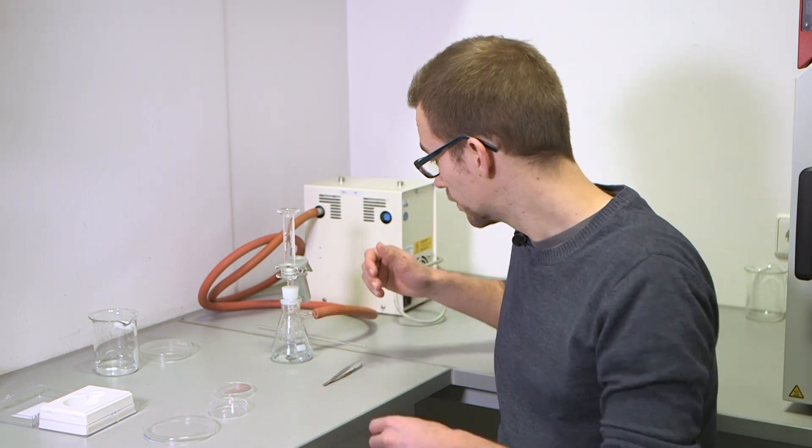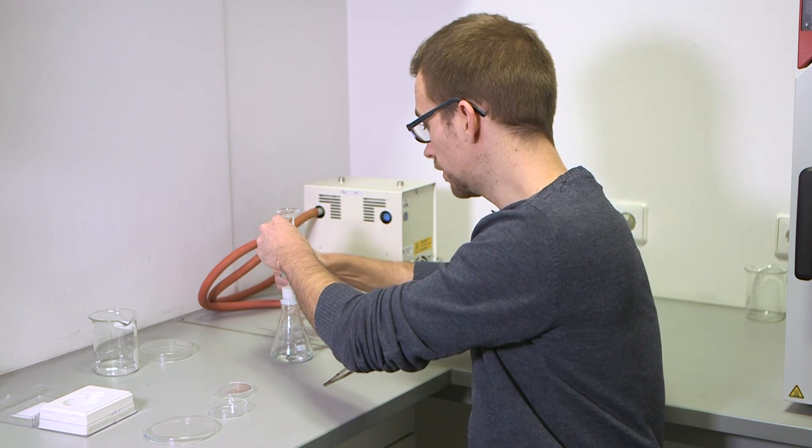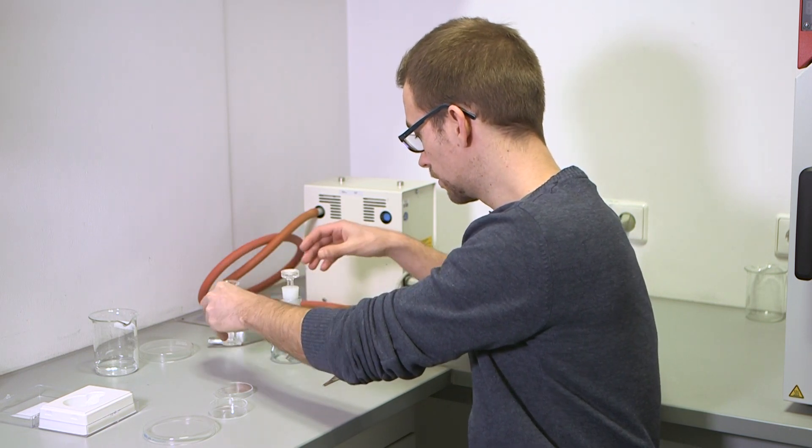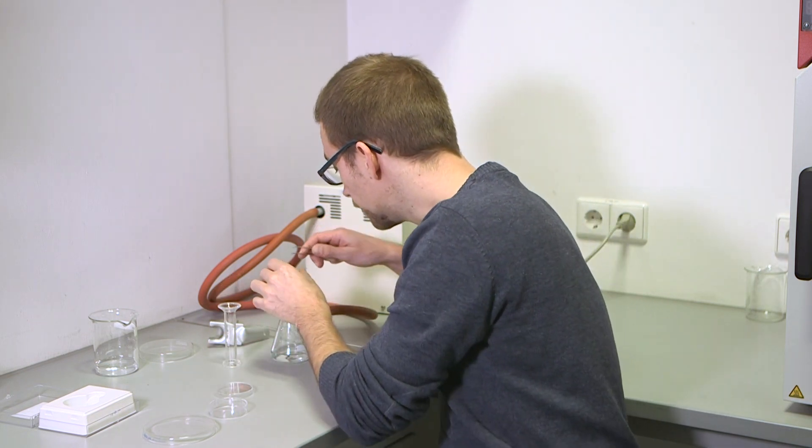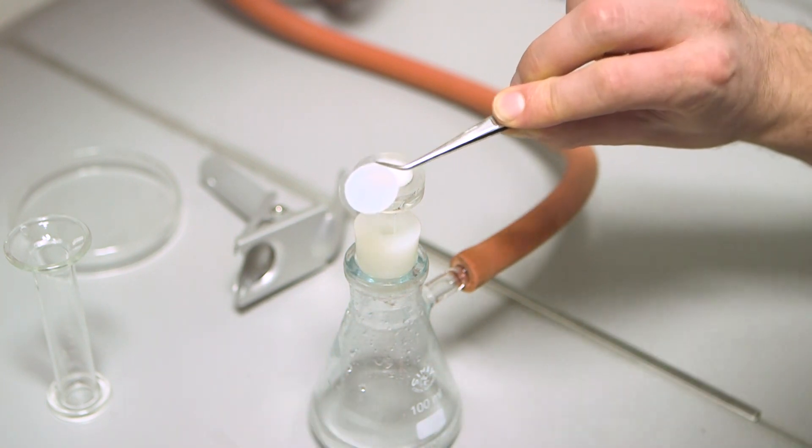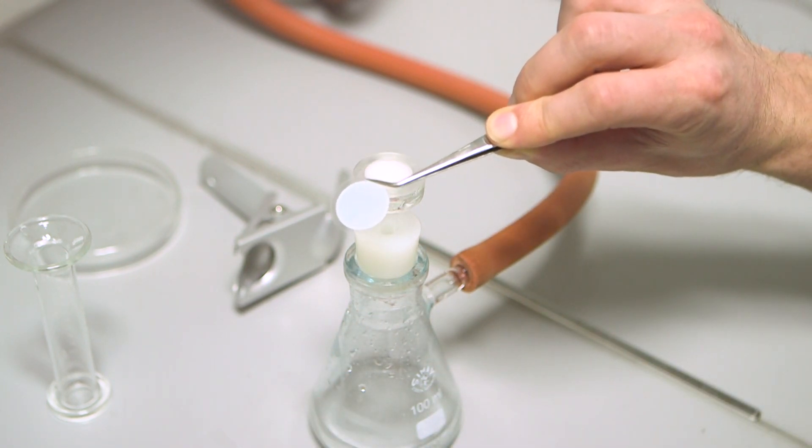After our filtration is done, we can remove the top cylinder by removing the clamp and before we can start our measurement, we're going to take the filter and leave it in the oven to dry.